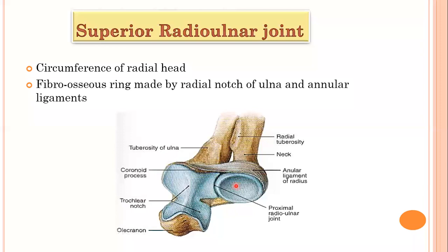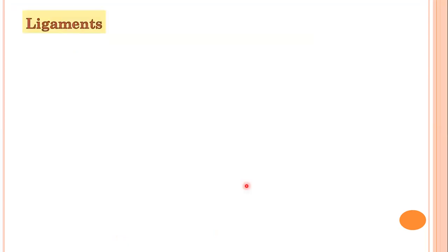These two parts — one stationary and the other rotating — make this a pivot type of synovial joint. In a pivot joint, one surface is stationary and the other surface rotates around it. This is the classification of the superior radioulnar joint: it is a pivot type of synovial joint.